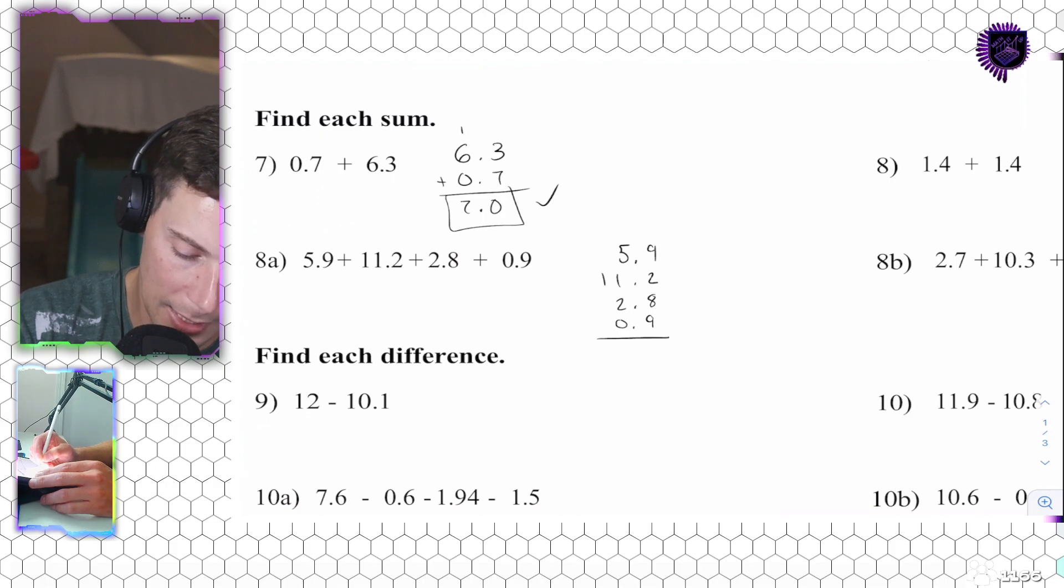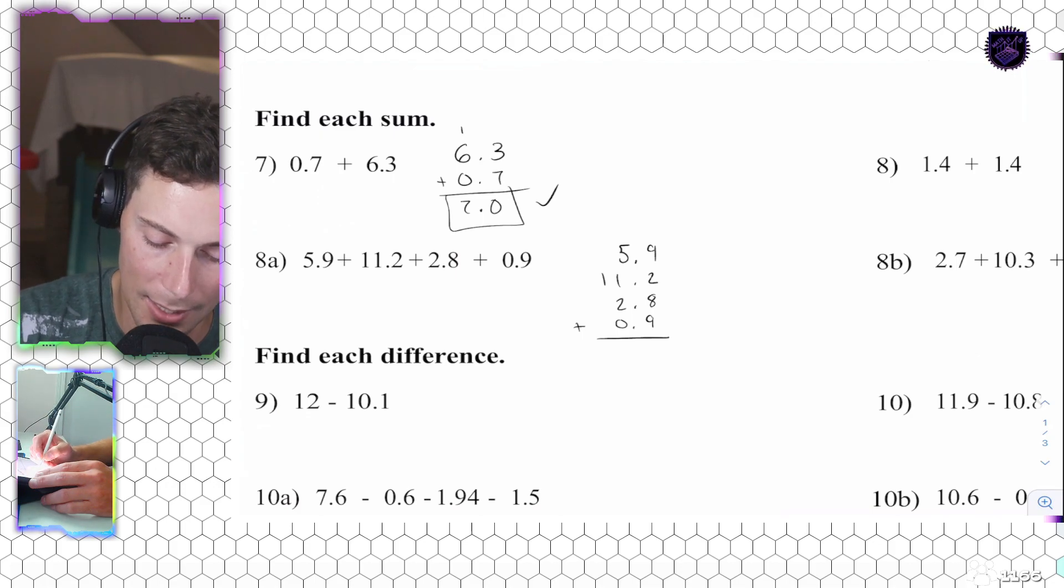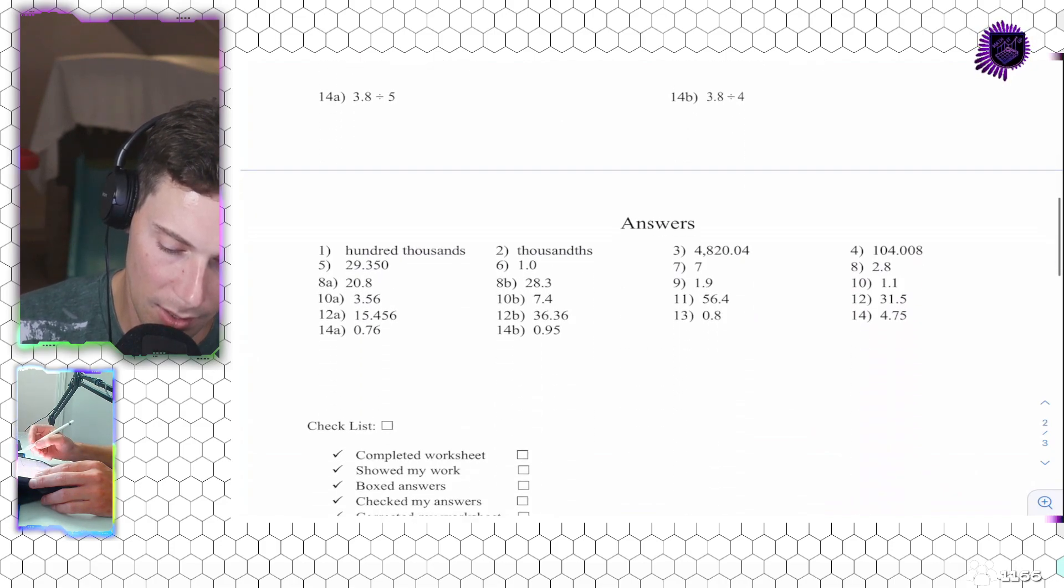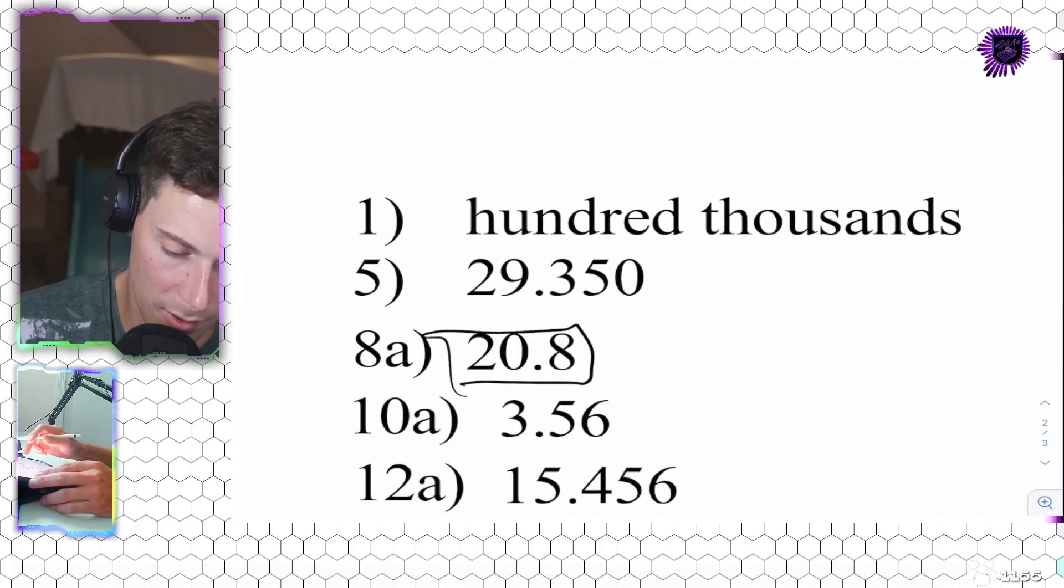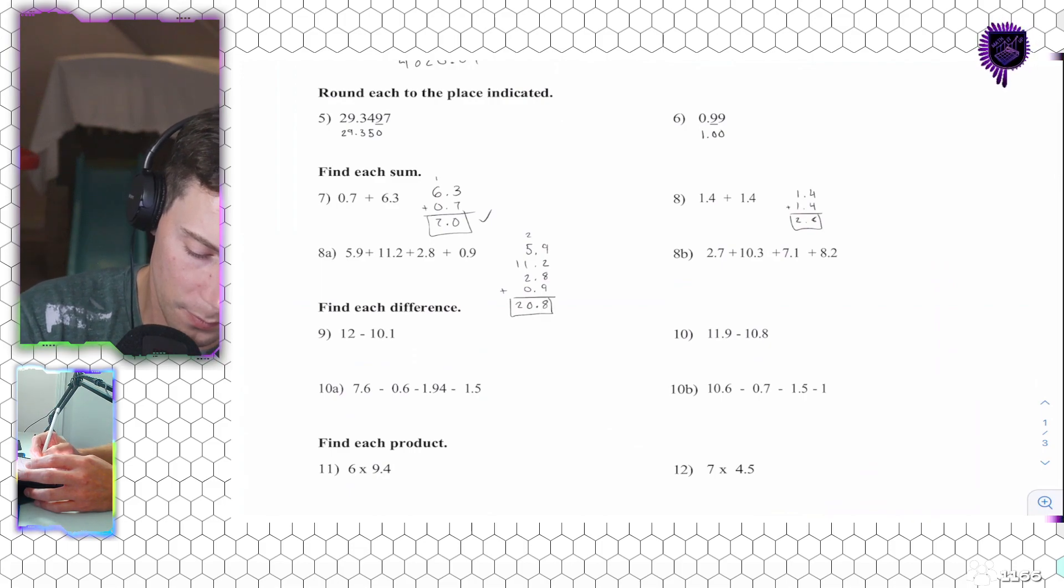I want to make sure I am lining these up appropriately. 9 and 2 is 11, plus 8 is 19, plus 9 more is 28. Carry the 2. 7. 18. 20. 20.8. Again, go down. 8.8. Here it is right here. 20.8. Check your answer as you go. Check.